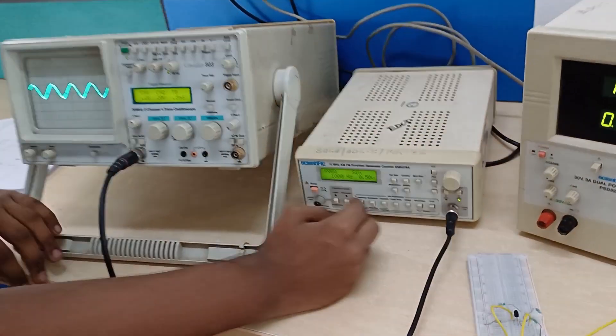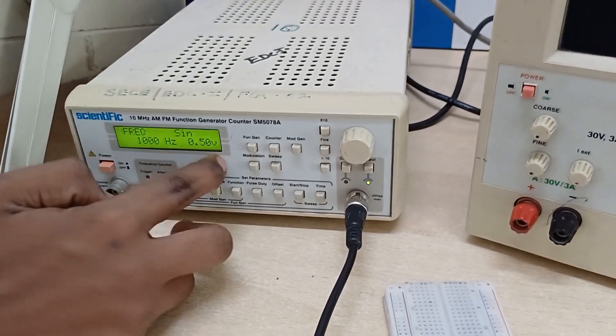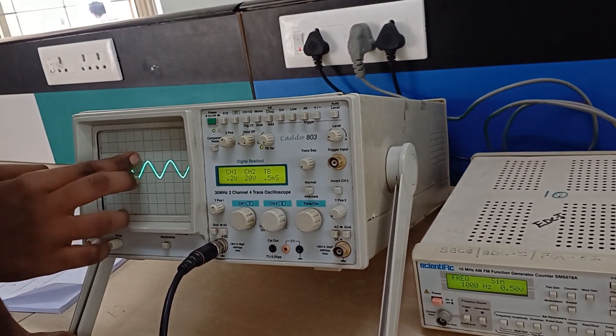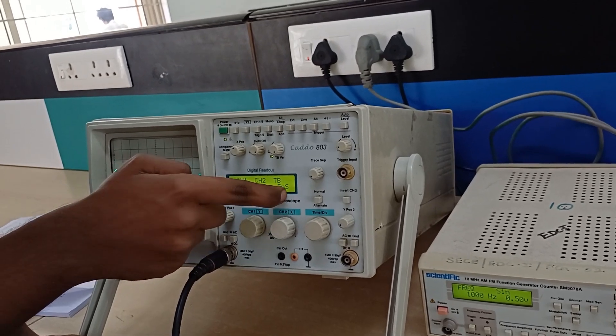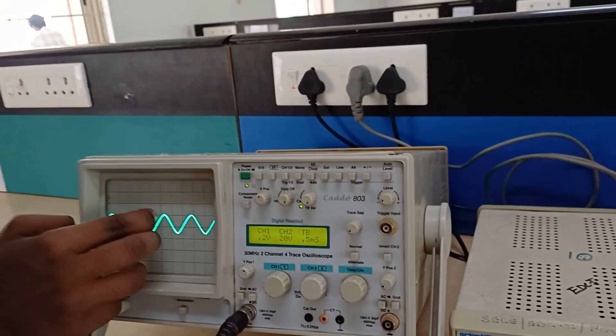Now we are starting with our source. The input voltage is 0.5 volts. And here we kept the scale of the oscilloscope at 0.2 for the x-axis. For the y-axis, the x-axis is 0.5 milliseconds and y-axis is 0.2 volts.